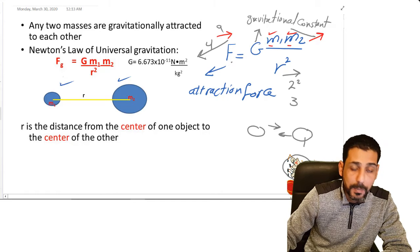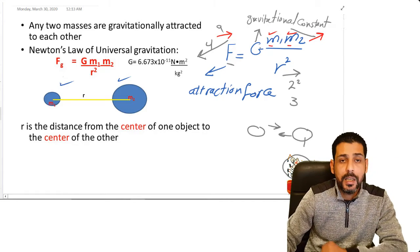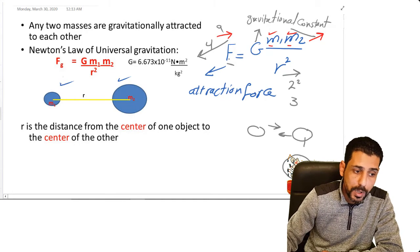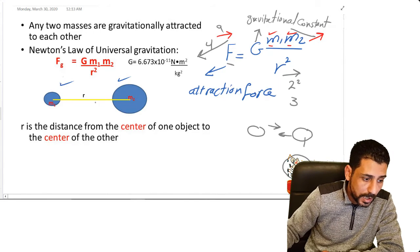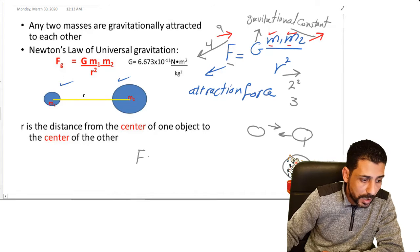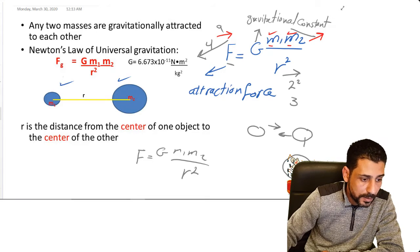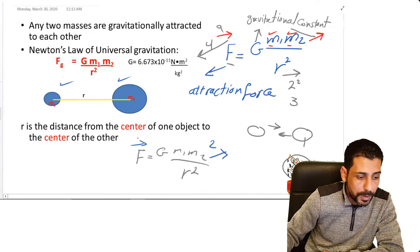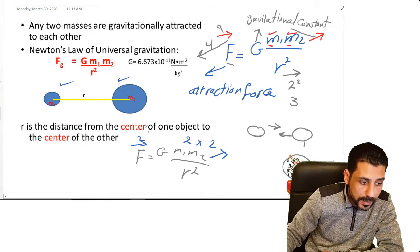The attraction force of the Earth is very large due to its huge mass. If one of the two masses is doubled, then the attraction force will be doubled. And if both masses are doubled — both the first mass and the second mass — then the force increases four times.